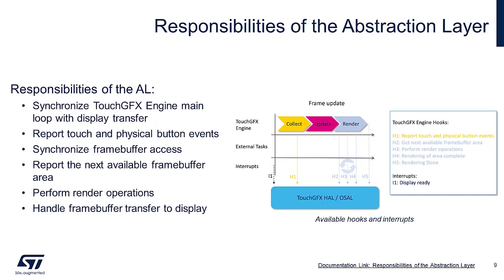The main loop of the TouchFX engine will continuously update the frame buffer. This process must be synchronized with the actual update frequency of the display to ensure that all frames will be transferred and displayed correctly. This synchronization is the responsibility of the abstraction layer. If the process is not properly synchronized, the main loop might overwrite the frame buffers before they have been transferred and disturbing glitches will appear on the display.